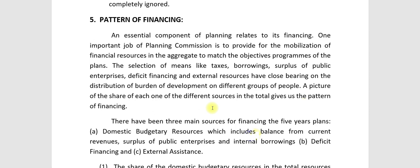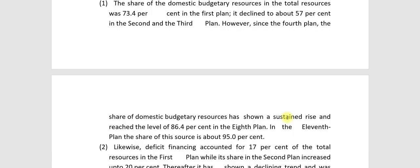Second is deficit financing. The share of domestic budgetary resources in the total resources was 73.4% in the first plan. It declined to about 57% in the second and third plan. However, since the fourth plan, the share of domestic budgetary resources has shown a sustained rise and reached the level of 86.4% in the eighth plan.